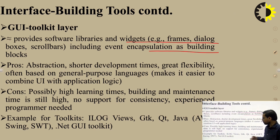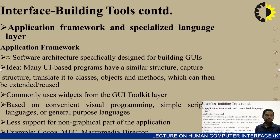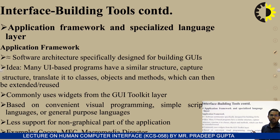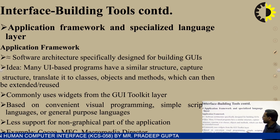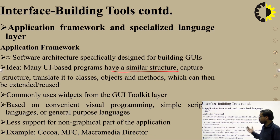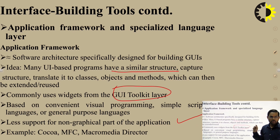Experienced programmers are needed for GUI toolkits. Examples include ILOG Views, GTK, Qt, Java .NET UI toolkits. Application framework is a specialized language layer designed for building GUI ideas — many UI-based programs have a similar structure, captured in classes, objects, and methods which can be extended. Commonly used widgets are GUI toolkit-based, supporting conventional visual programming and simple scripting languages. Examples: Cocoa, MFC, Macromedia Director.